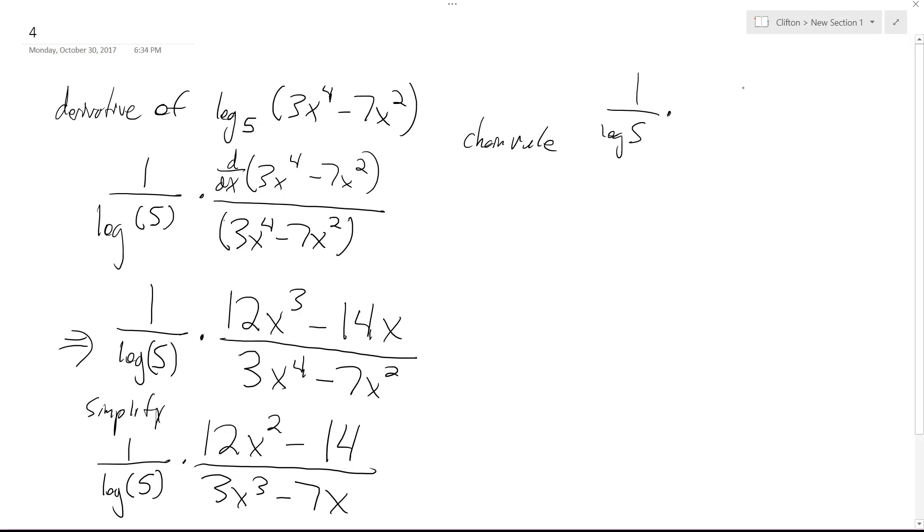So the derivative of log of x, what's inside, is similar to 1 over x, but in this case the x is the whole quantity 3x raised to the 4th minus 7x. So that goes on the bottom, but because this is the chain rule, I take the derivative of whatever that is.